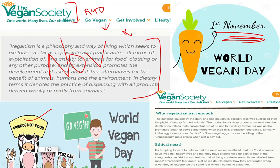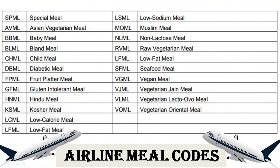Now let's discuss airline meal codes. These are four-letter codes used in airline ticketing, similar to two-letter airline codes like AI for Air India, or airport codes like JFK for John F. Kennedy Airport — all given by IATA. Meal codes have the last two letters 'ML' and the first two letters indicating the special kind of meal. We have SPML for special meal.